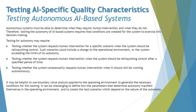Second is testing whether the system requests human intervention after a specified period of time — so one criterion is condition-based and the second is time-based. The third is testing whether the system unnecessarily requests human intervention when it should still be working autonomously — this is essentially the negative scenario of the first two.